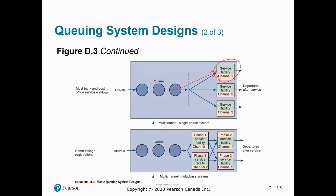The last diagram: two channels, two phases — like a hospital with two emergency doctors. The first patient goes to one doctor, the second to the other. One doctor determines the patient has cancer and sends them to a specialist; the other determines a broken leg and sends to another specialist. Each person goes through two phases, and two channels exist.